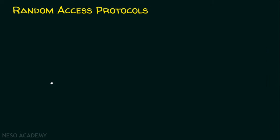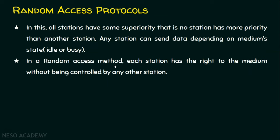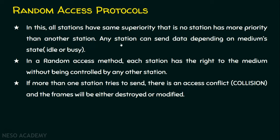Random access protocols allow any station to send data at any time, but obviously there are chances for collision. In this approach, all stations have the same superiority — no station has more priority than any other. Any station can send data depending on the medium state, whether idle or busy. In a random access method, each station has the right to the medium without being controlled by any other station. So if more than one station tries to send, there is an access conflict — a collision — and the frames will be either destroyed or modified.